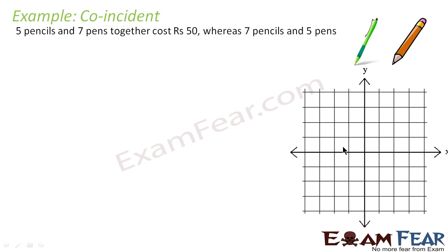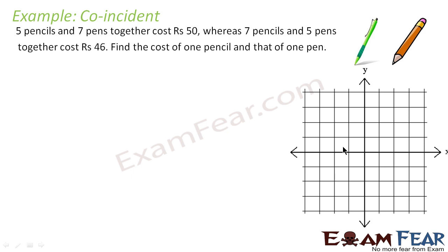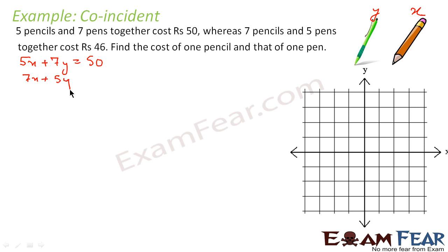Let's take one more example where the lines are coincident or intersecting. Five pencils and 7 pens cost together 50 rupees, whereas 7 pencils and 5 pens together cost 46 rupees. Find the cost of 1 pencil and 1 pen. We put pencil as x and pen as y. So the first equation is 5x plus 7y equals 50, and the second equation is 7x plus 5y equals 46. We have to find the cost of pencil and pen, that is, find the value of x and y.